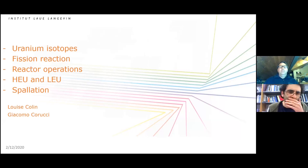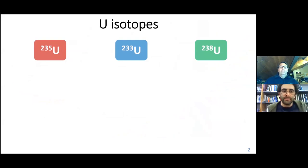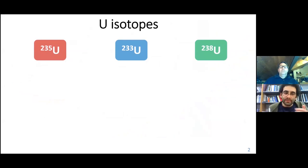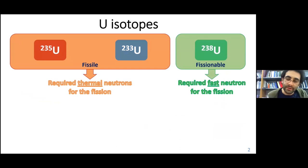Let's talk about the uranium isotopes. So actually we have three kinds of isotopes for the uranium that we can use in the nuclear reactor: uranium-235, uranium-233, and uranium-238. All the isotopes possible to use in the nuclear reactor can be divided in two different groups: the fissile isotopes and fissionable isotopes. The difference is that the fissile isotopes require thermal neutrons for the fission reaction, while the fissionable isotopes require fast neutrons for the fission.